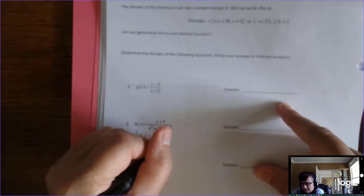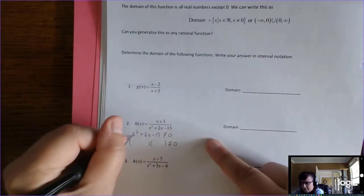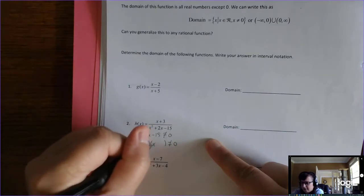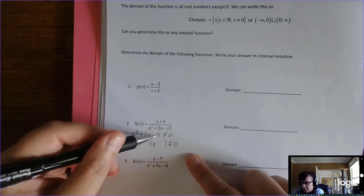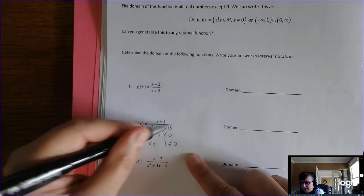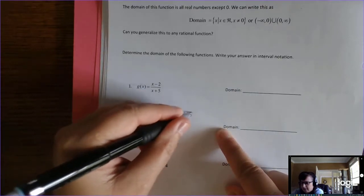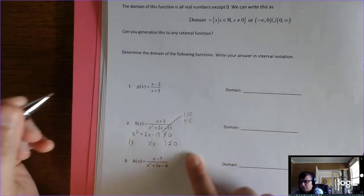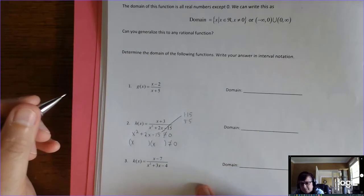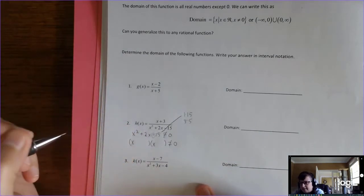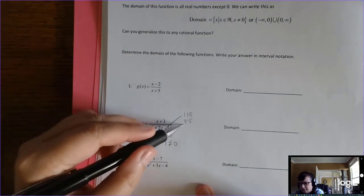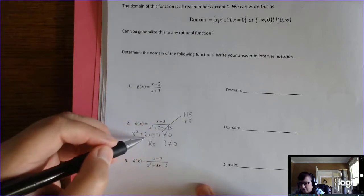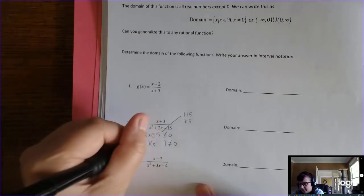So if I try to factor this, remember x goes here and here, and remember what you want to do is you want to check the factors of 15. 1 times 15 and 3 times 5, those are the only two choices, and then you look at that sign. Which one of these factors subtract to be 2? And that's 3 and 5.